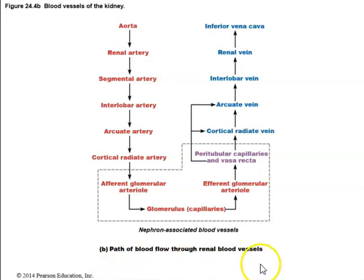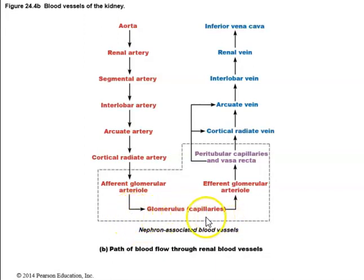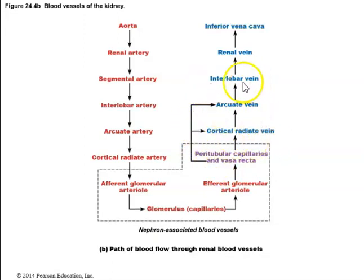From the glomerulus, blood flows into the efferent glomerular arteriole, moving away from the glomerulus. The efferent arteriole then becomes the peritubular capillaries and vasa recta, which are associated with parts of the tubules of the nephron. Drainage then proceeds through cortical radiate veins, arcuate veins, interlobar veins, and the renal vein, which drains into the inferior vena cava.